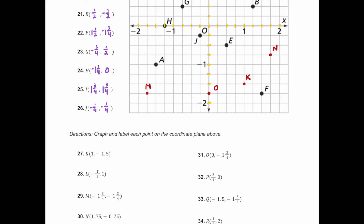For P, which is three fourths comma zero. Start at the origin and move three fourths to the right — that's three of these boxes, so positive three fourths. The zero means don't move up or down, so we plot this point right on the positive x-axis and call it P.